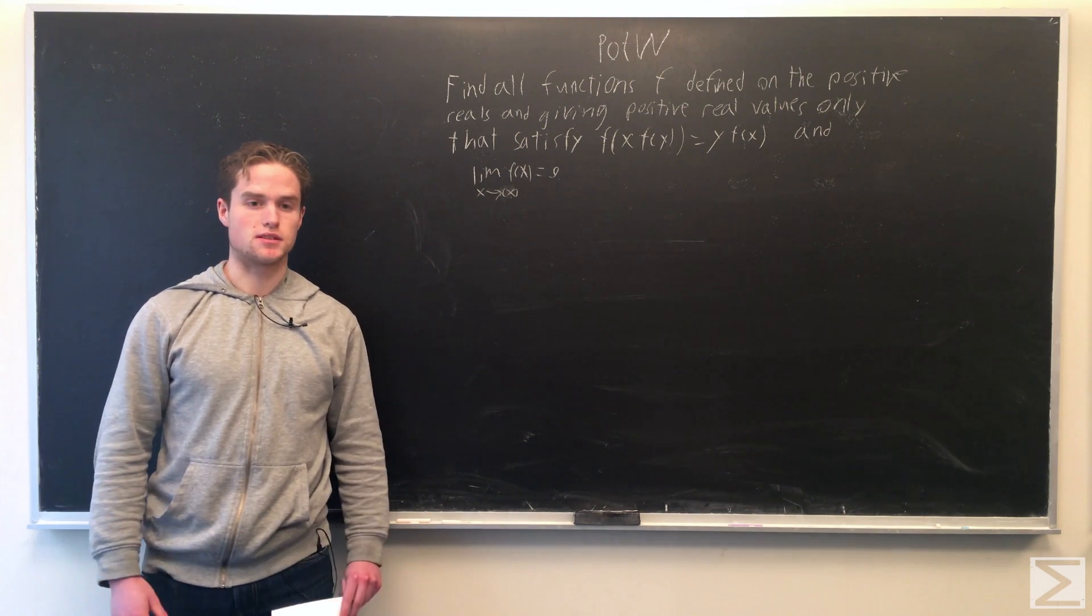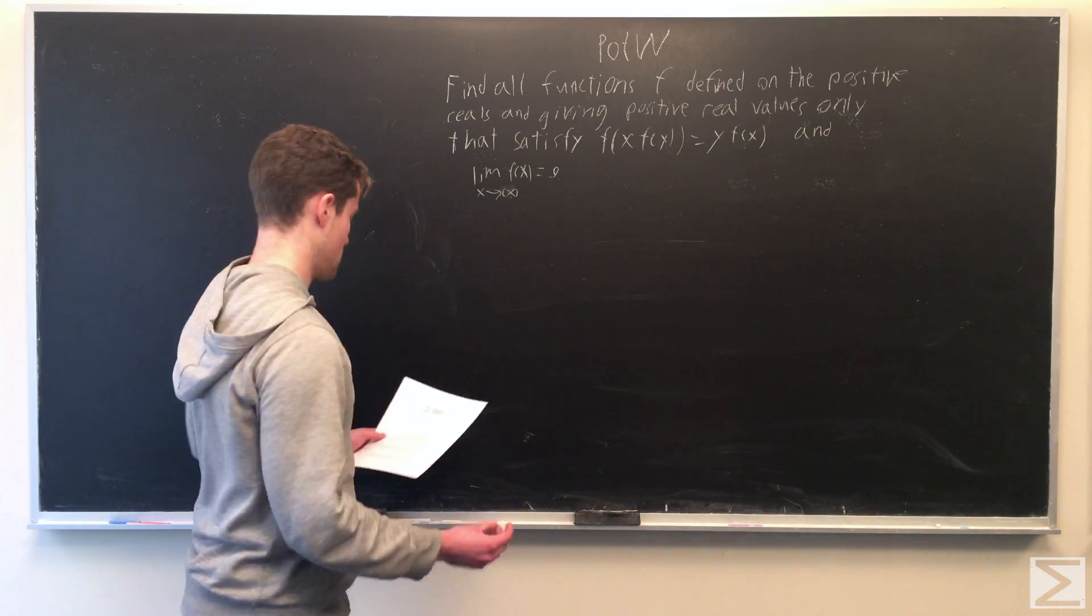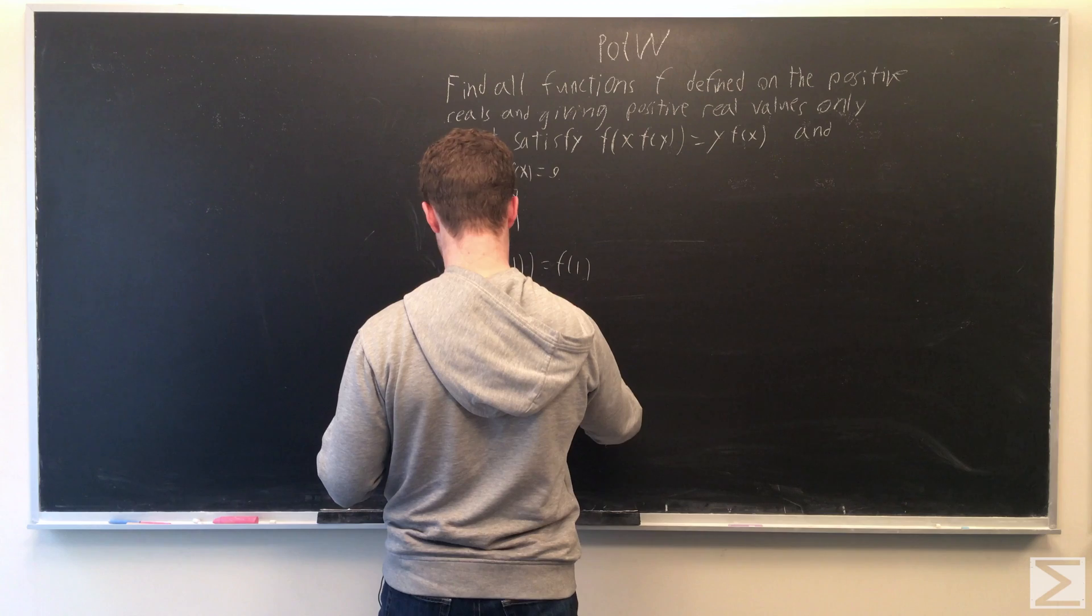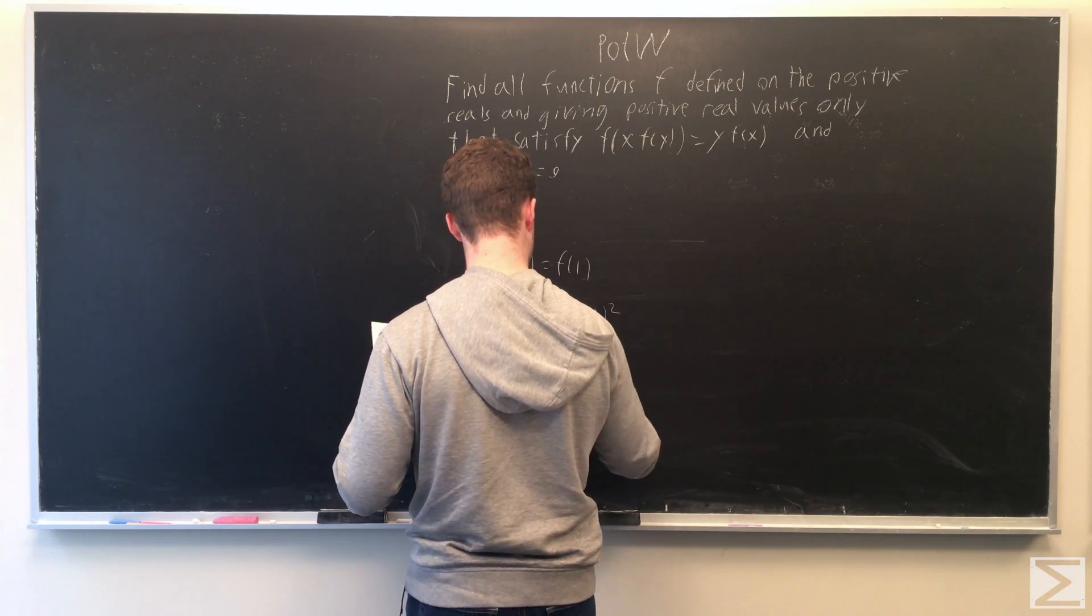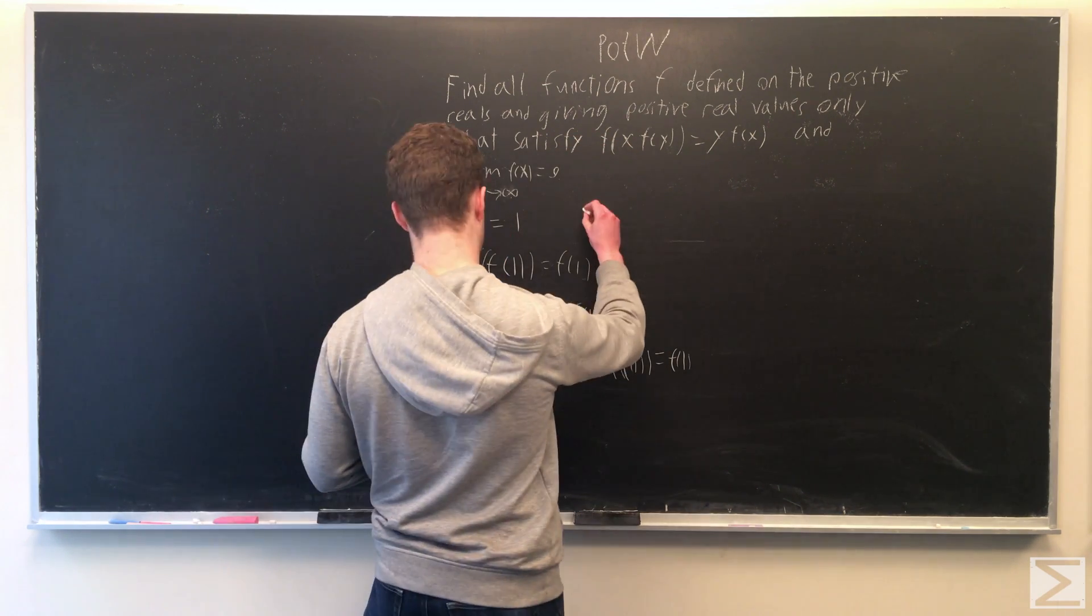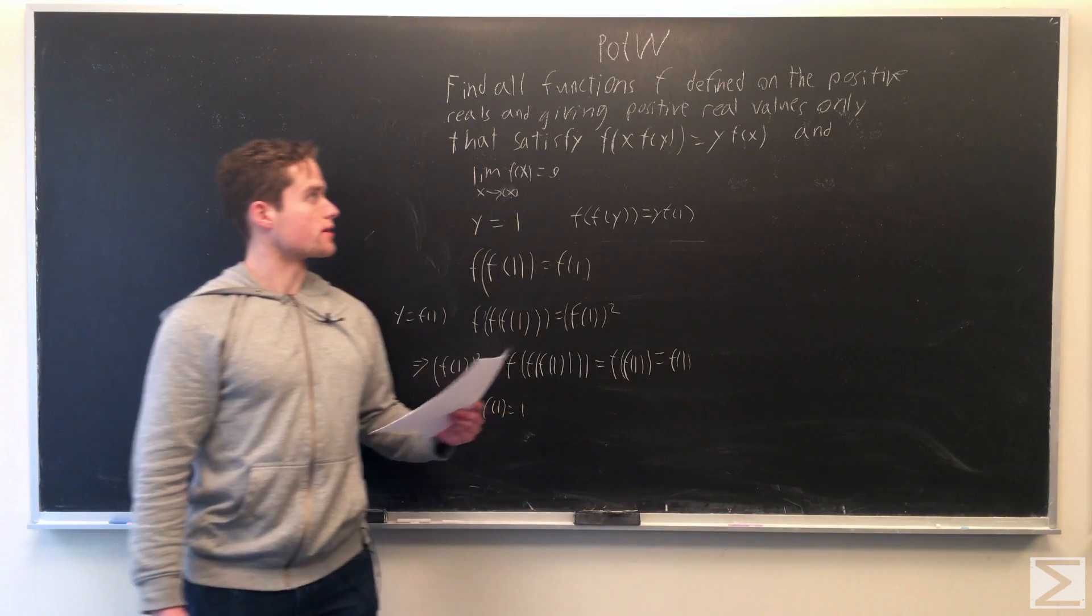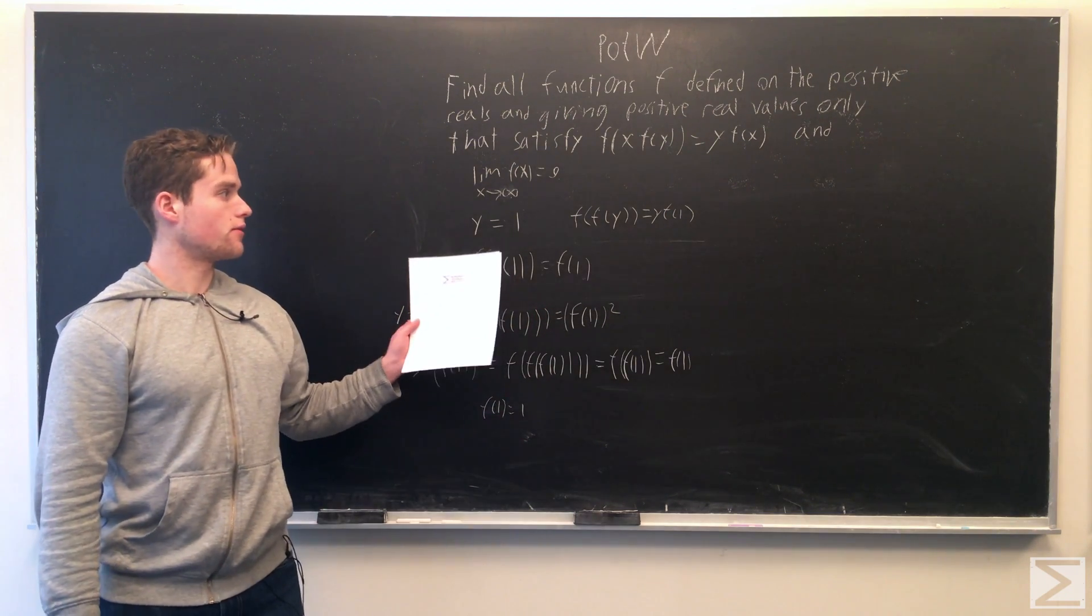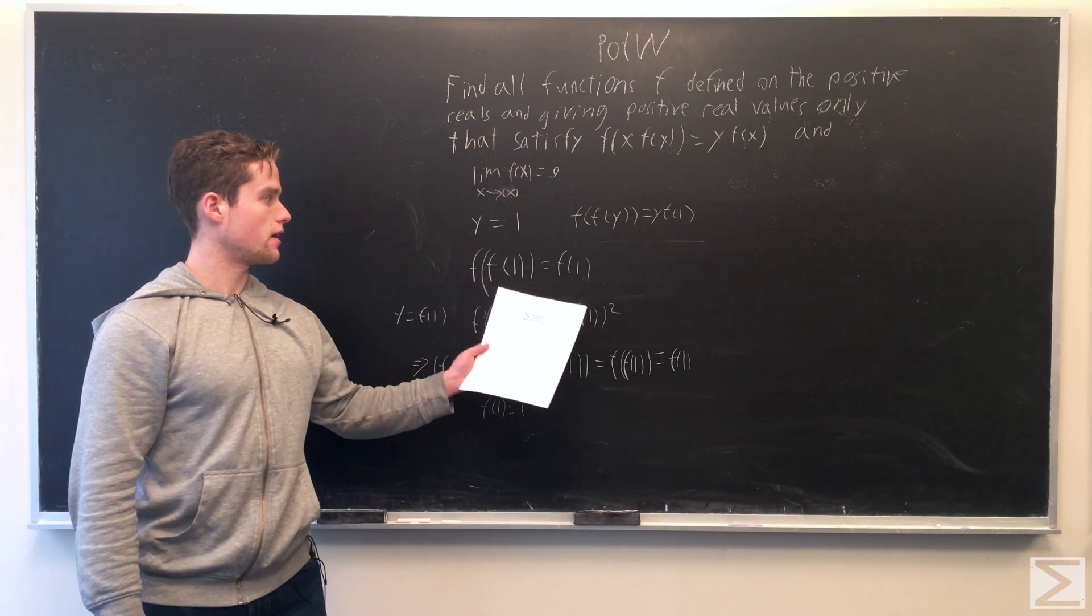So the first thing we're going to do is establish that f(1) = 1 is a fixed point. Plugging in x = 1, we get f(f(y)) = y·f(1), and then plugging in y = 1 there gives us f(f(1)) = f(1).